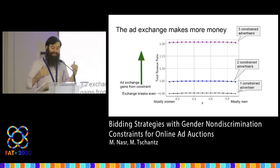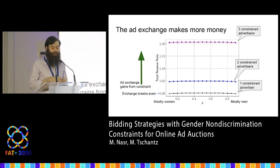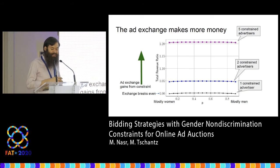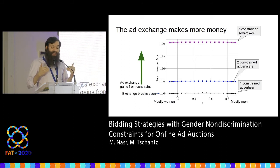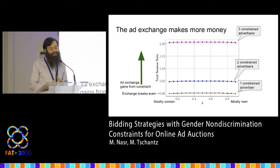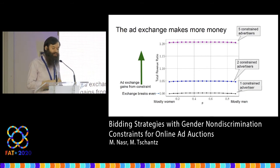Finally, let's consider the ad exchange's revenue. Here I'm plotting the ratio of the ad exchange's revenue with various numbers of constrained advertisers to what their revenue would be with no constrained advertisers. The bottom line shows that with a single constrained advertiser, revenue is approximately unchanged — a flat line at one. The graph also shows that as the number of constrained advertisers increases, so does the ad exchange's revenue. I think this should incentivize ad exchanges to implement and offer this as an option, or at least tolerate advertisers using this bidding approach on their own.